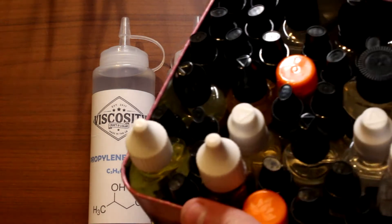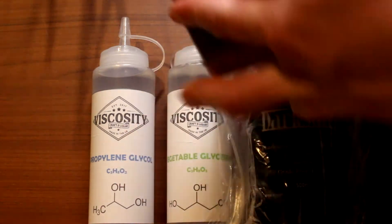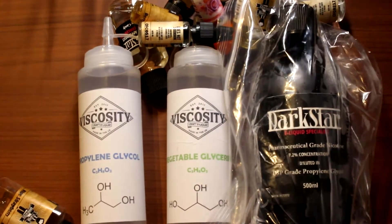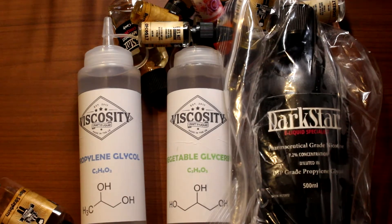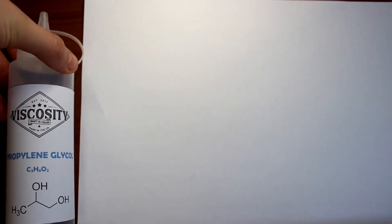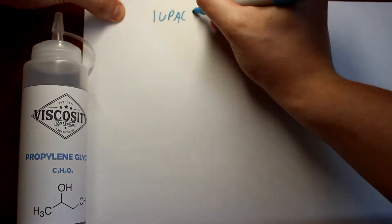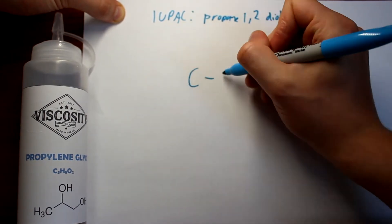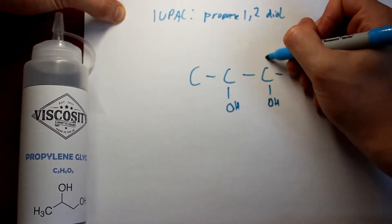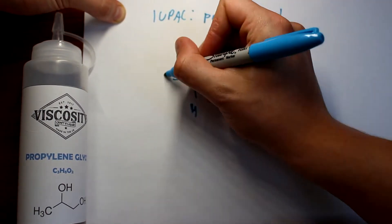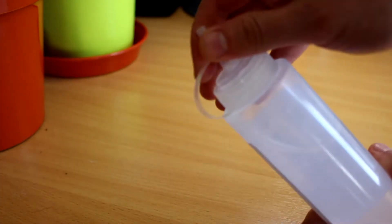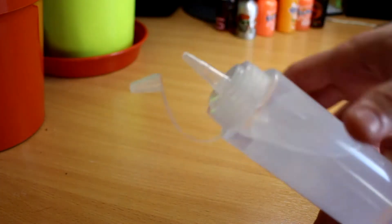You'll sometimes hear people referring to the base of an e-liquid. This is just the non-flavour part of the liquid, so the PG and the VG. PG is a synthetic compound with a chemical formula C3H8O2. It is useful in e-liquids as it carries flavours and provides throat hit. It's a thin liquid with a consistency only slightly thicker than water, with no odour or real taste to it.